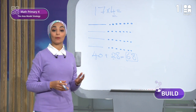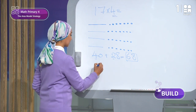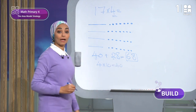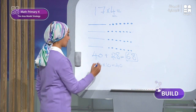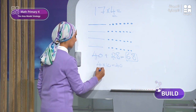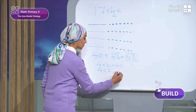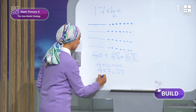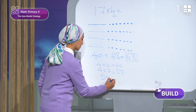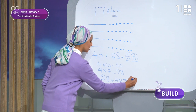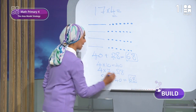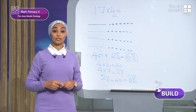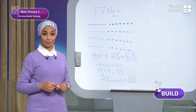We can also solve it another way: 4 times 10 gives 40, and 4 times 7 gives 28. Then 28 plus 40 gives the same answer, 68. I solved it using two different ways. In the same way, you can solve problems 3 and 4 on the same page.